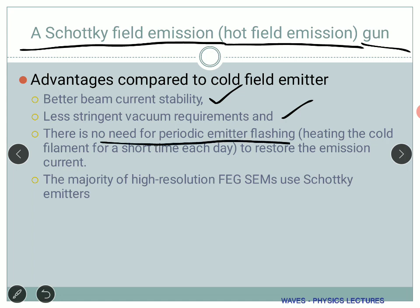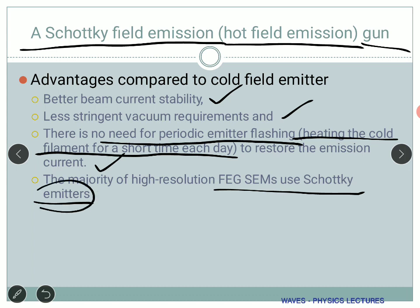There is no need for periodic emitter flashing with the Schottky gun. With a cold cathode you need to keep heating it regularly to keep the system active, but hot field emission does not require that. SEM is an instrument that cannot be kept shut down for a long time — it should be used regularly to keep it up and running. The majority of high-resolution FESEM instruments use the Schottky emitter, though it comes at a higher cost.